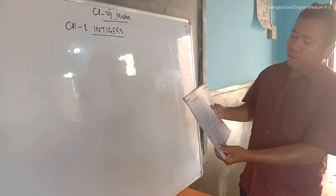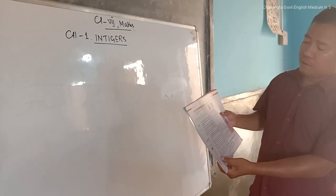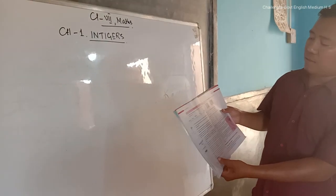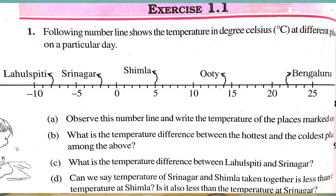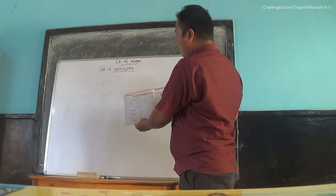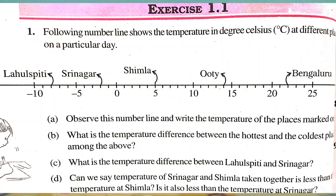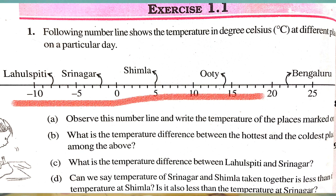You see the question here. The following number line shows the temperature in degree Celsius at different places on a particular day. Here we have 4 questions. We have to see the number line given here and we have to answer the 4 questions.